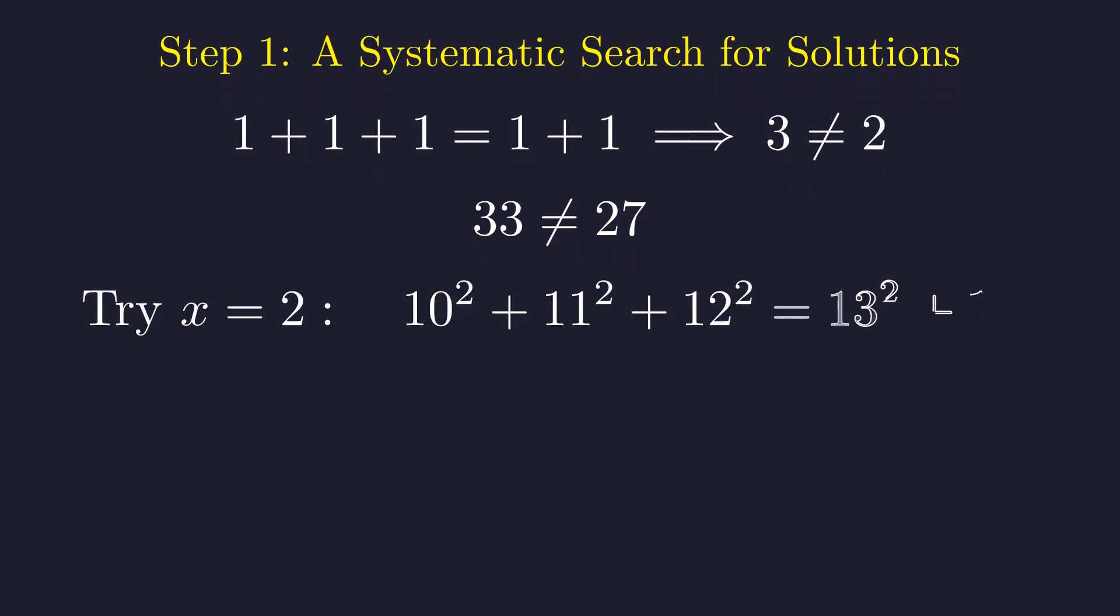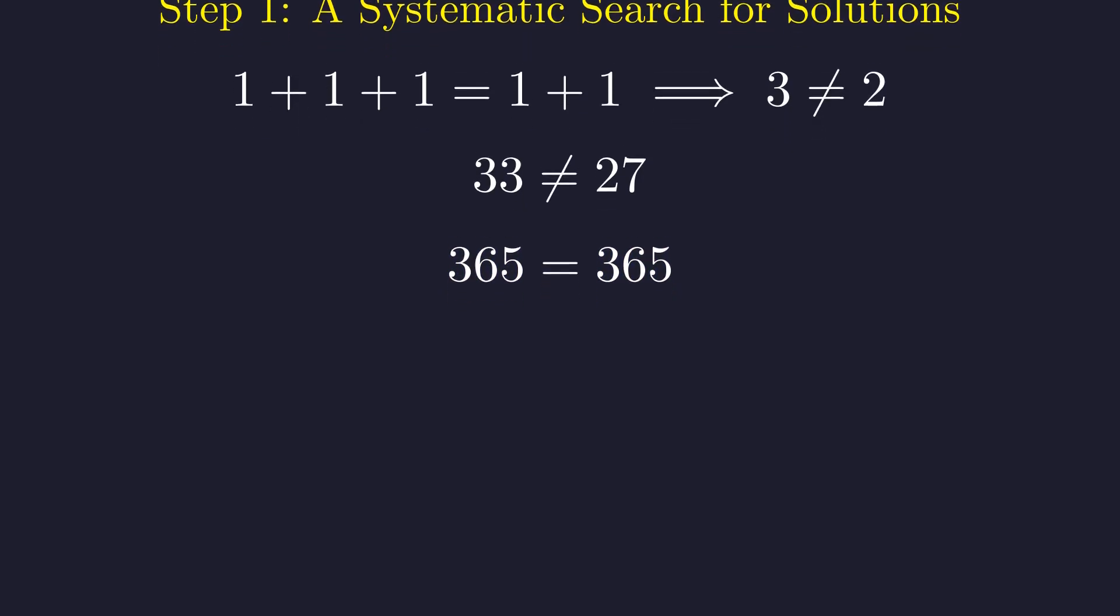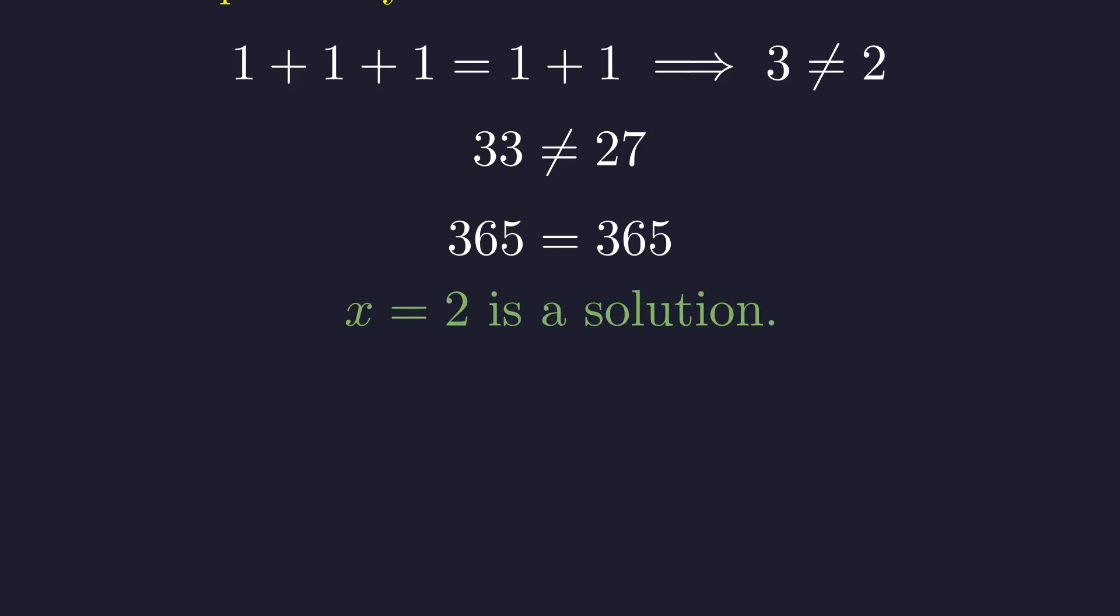Now let's try x equals two. When we square each base, the left side becomes 10 squared plus 11 squared plus 12 squared, while the right side becomes 13 squared plus 14 squared. And remarkably, both sides give us exactly the same value. We've found our first solution. So x equals two definitely works.